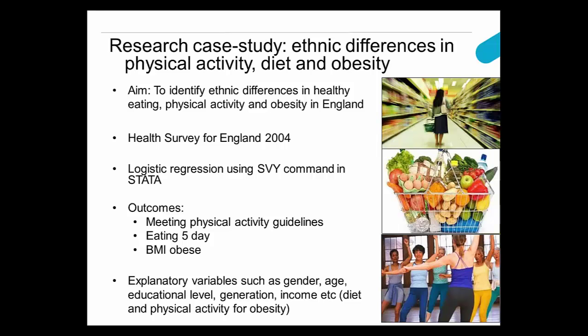There's a lot of theory suggesting there may be a number of confounders behind observed differences, particularly in obesity — for example, socioeconomic position, migration, culture, or religion. We used the Health Survey for England data from 2004, which sounds like old data, but it's actually the most recent national data on this topic. There hasn't been another ethnic boost on the HSE since 2004. The ethnic boost data oversampled people from seven key ethnic minority groups: Black African, Black Caribbean, Indian, Pakistani, Bangladeshi, Chinese, and Irish.